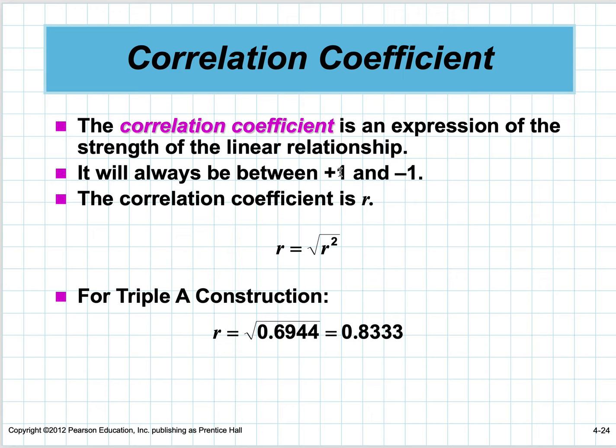The Pearson correlation coefficient goes from plus one to minus one. If it's plus one, it's perfectly linear going uphill. If it's minus one, it's perfectly linear going downhill. If it's zero, it means there's just a scatter diagram with no relationship at all. For Triple A Construction, if we take the square root of 0.6944, we get 0.8333—that's the Pearson correlation coefficient.